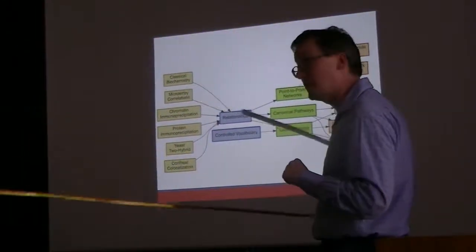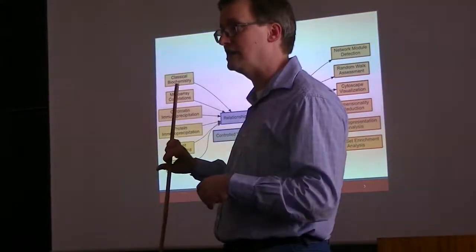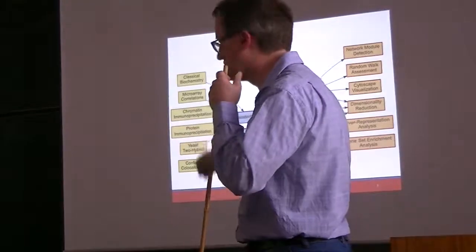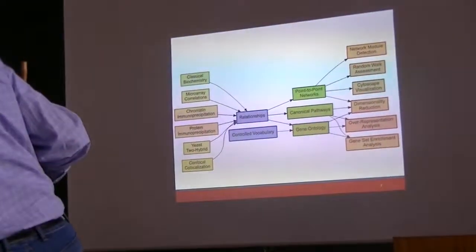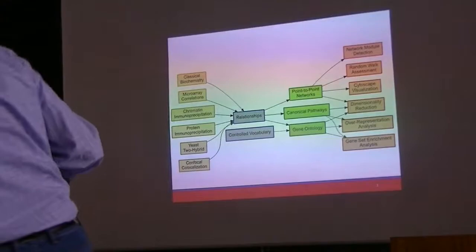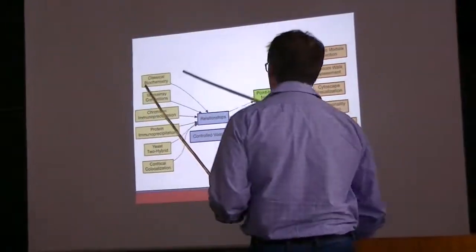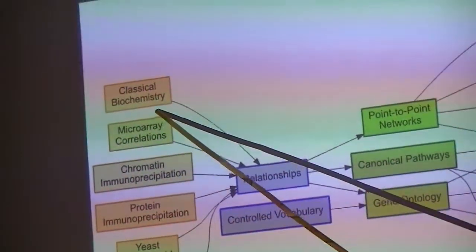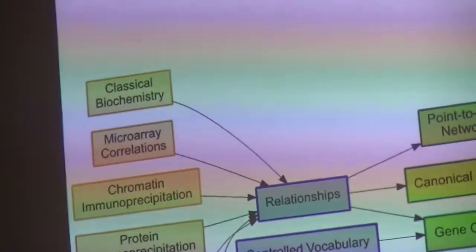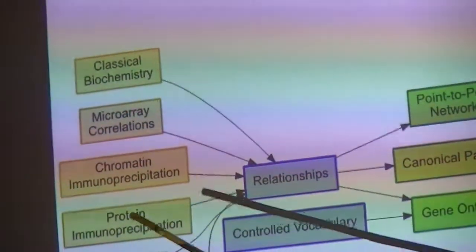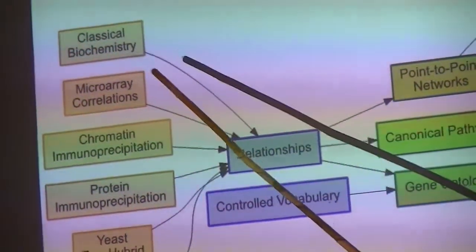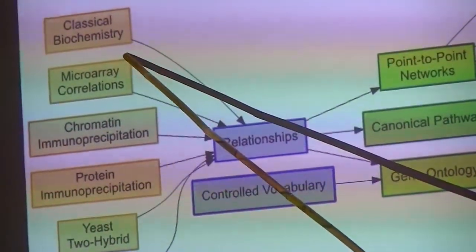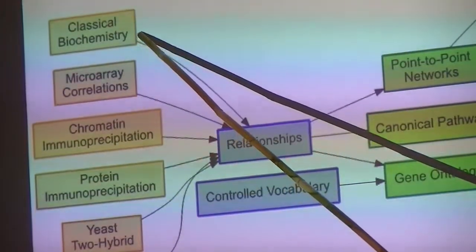We have our point-to-point network, the biological networks that we're constructing, and the canonical pathways, these being the systems like gene ontology that we've looked at. Gene ontology is special in that it has this controlled vocabulary aspect tied to it. We were able to learn something about what proteins and genes do using classical methods before we had proteomics, before we had genomics, before we had transcriptomics.